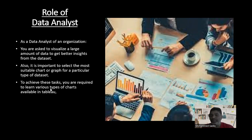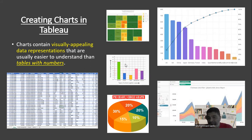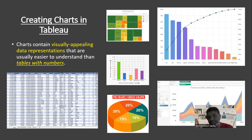To achieve this, we'll learn some of the charts available in Tableau. When creating a chart in Tableau, charts contain visually appealing data representations that are usually easier to understand than tables with numbers. On the left-hand side, we have raw data in Excel format, which becomes very difficult to understand. The same data can be converted to different types of charts. Tableau supports many different types of charts, and we'll learn some of them in this session and the coming sessions.